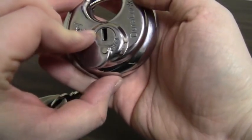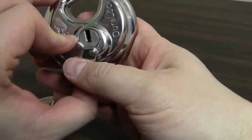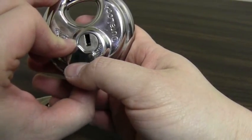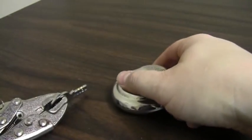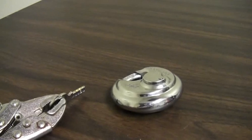I do worry if we're getting too much crud in the lock at this point, but no, it looks pretty clean in there. All right, let's try to add a little more foil and see if we can get this to work.